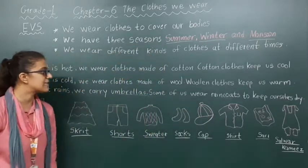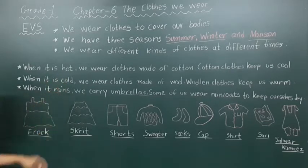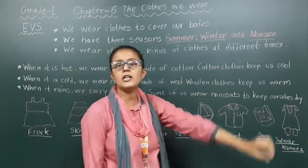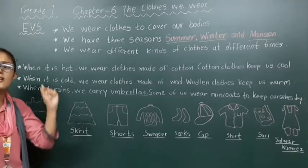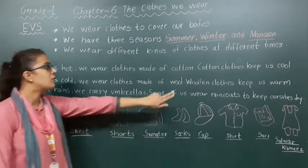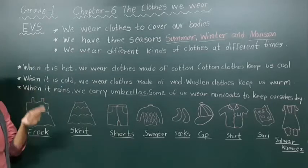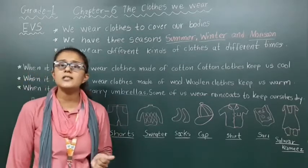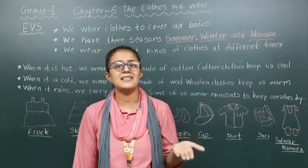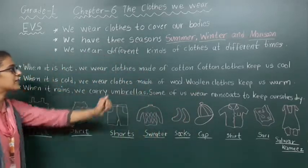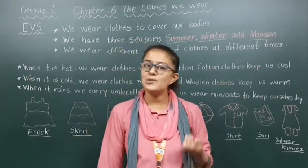Let's quickly recap. In summer, when it is hot outside, we wear cotton clothes — cotton clothes keep us cool. When it is cold outside, in the winter season, we wear woolen clothes — woolen clothes keep us warm. When it is raining outside, in the monsoon season, we carry an umbrella or raincoat to keep ourselves dry. I hope the concept of these seasons and which clothes to wear in each season is now clear to everyone.